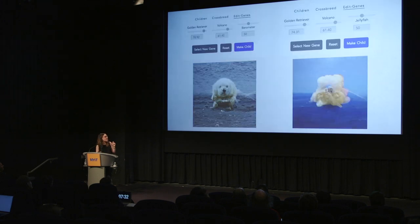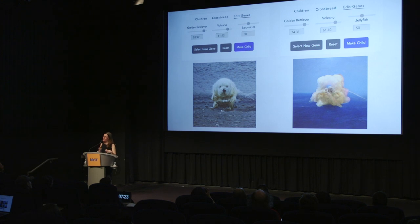I can add even more genes — like a barometer, which makes my volcano dog kind of more round, or a jellyfish, which makes it more fiery and adds a blue tint like it's underwater. You can tweak all these parameters. I feel like the different genes are like paint, and I can create anything in latent space using them.